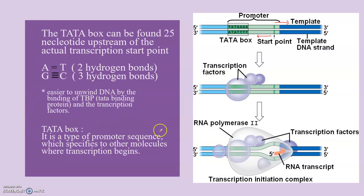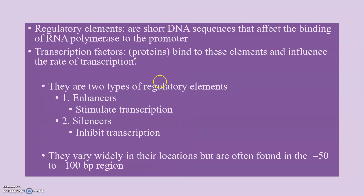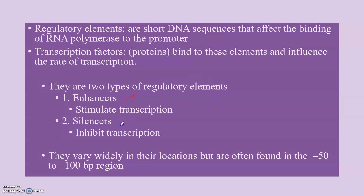To recall: the TATA box is a type of promoter sequence which specifies to other molecules where transcription begins. Regulatory elements are short DNA sequences that affect the binding of RNA polymerase to the promoter. Transcription factors are proteins that bind to these elements and influence the rate of transcription. There are two types of regulatory elements — enhancers and silencers. Enhancers stimulate transcription, while silencers inhibit transcription. They vary widely in their location but are often found in the 50 to 100 BP region.